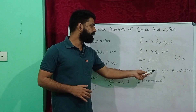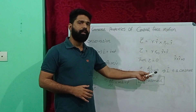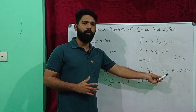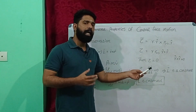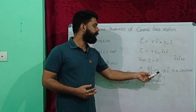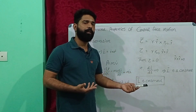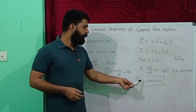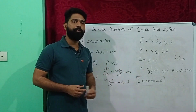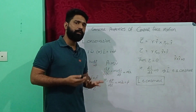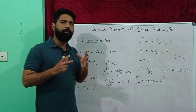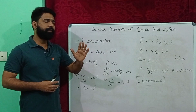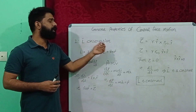Since dL/dt equals zero, this implies L is a constant value, because when we differentiate a constant it gives zero. So L is a constant, which means angular momentum is conserved. We have thus proved the first general property of central force motion: angular momentum is conserved.